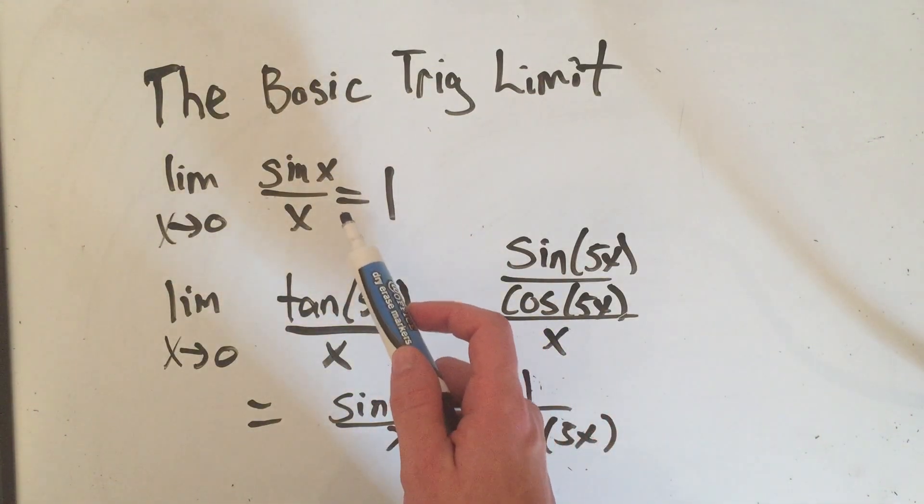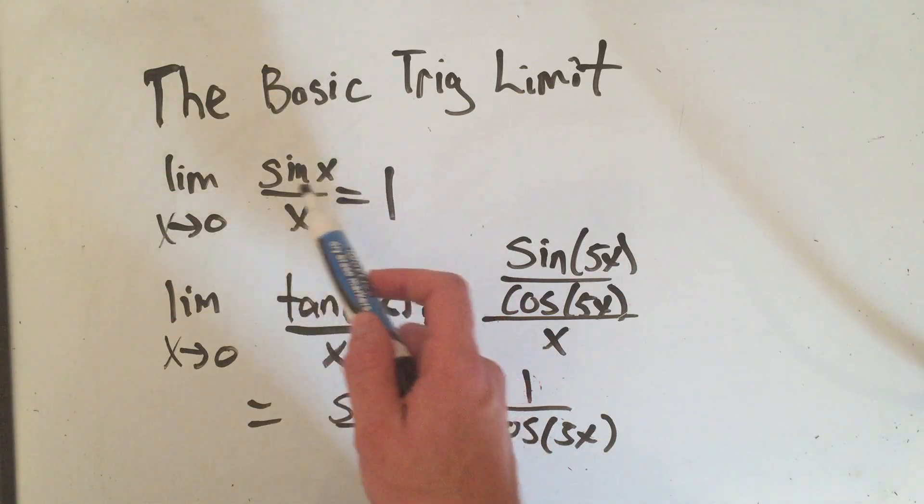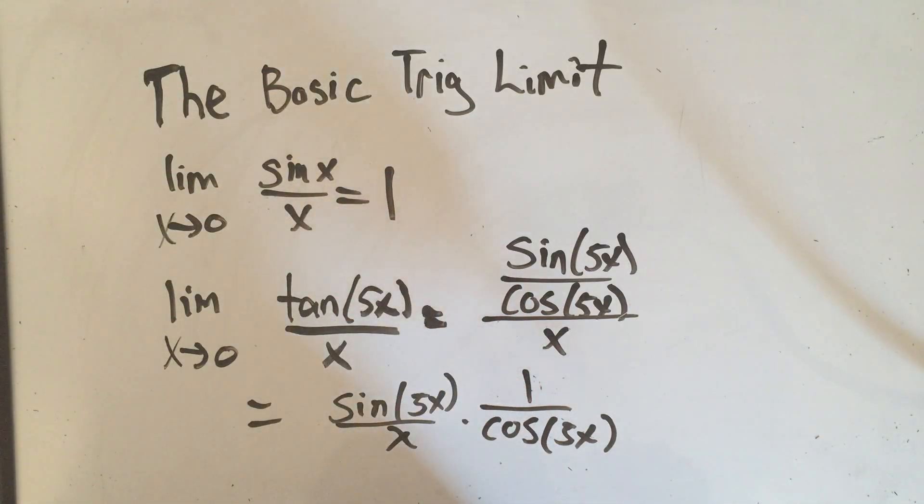Now the identity says that whatever is in here inside the sine has to also be on the bottom and they both have to be going to 0. So down here I've got sine of 5x but I only have x on the bottom.